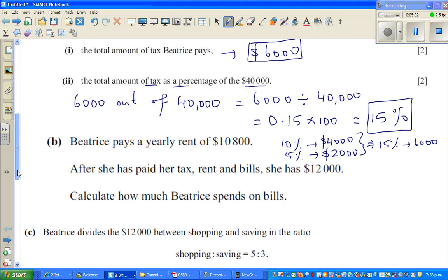Moving on to question B. Beatrice pays a yearly rent of $10,800. After she has paid her tax, rent, and bills, she has $12,000 left. Calculate how much she spends on bills.